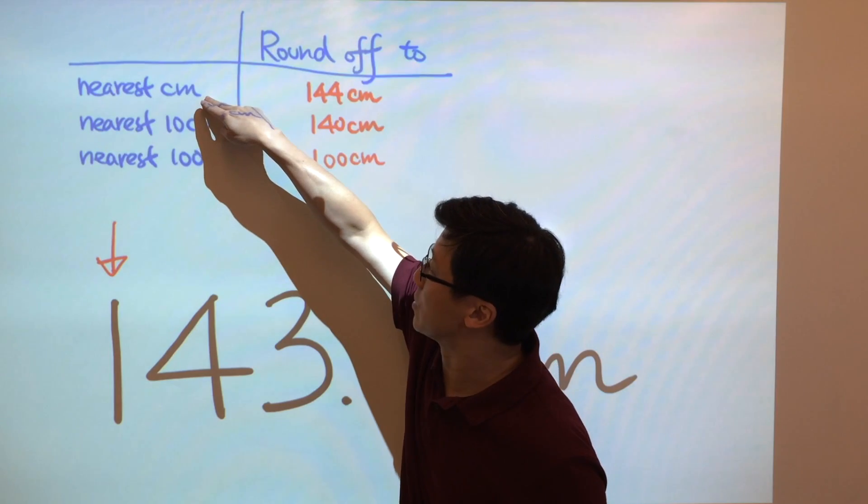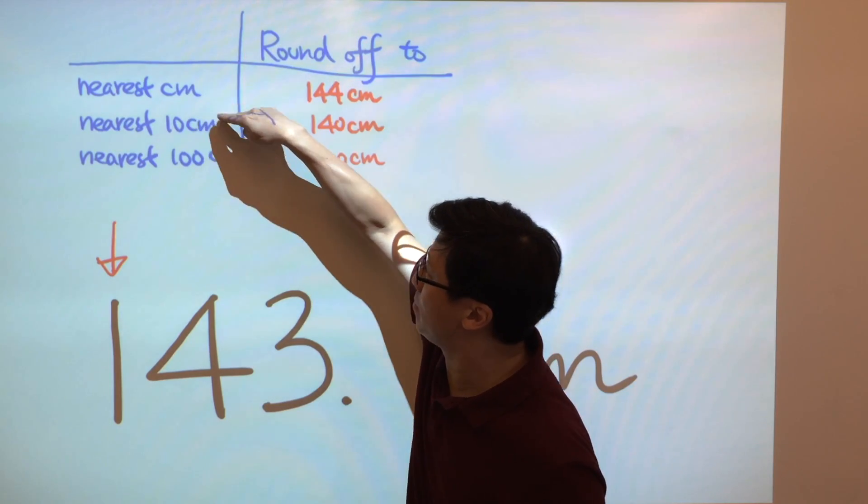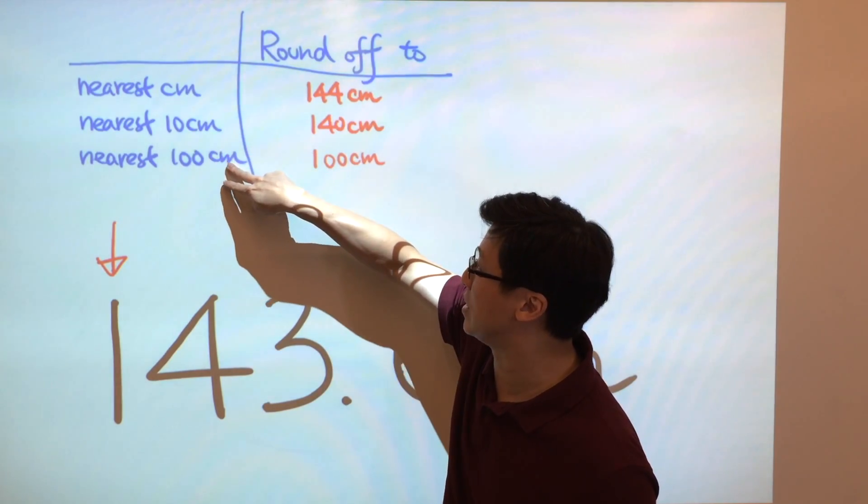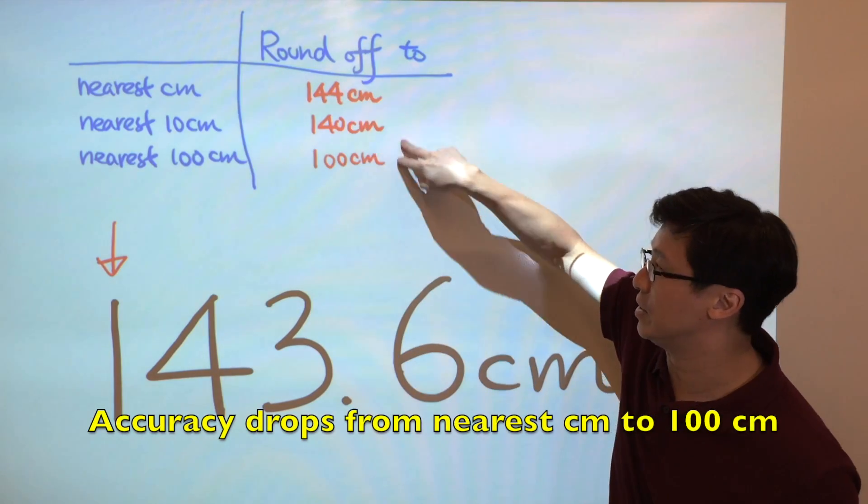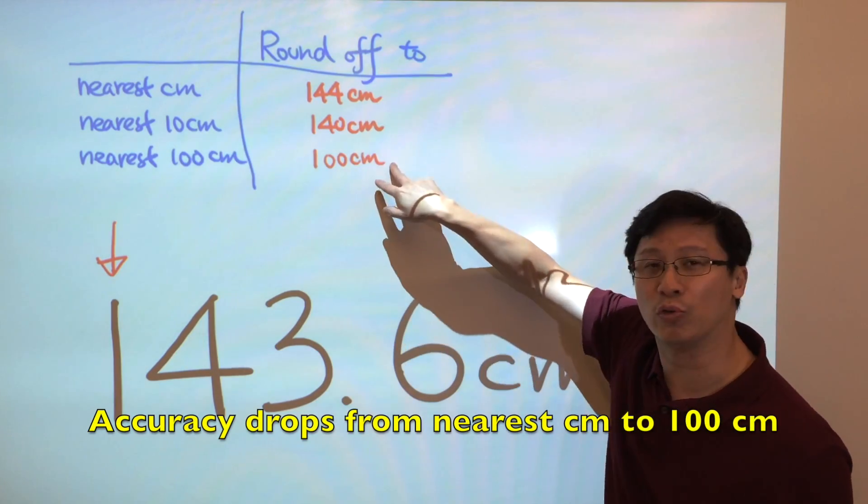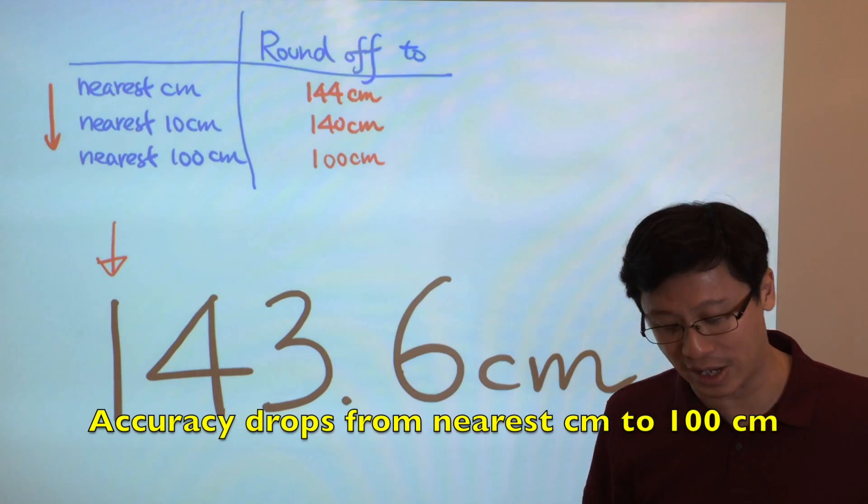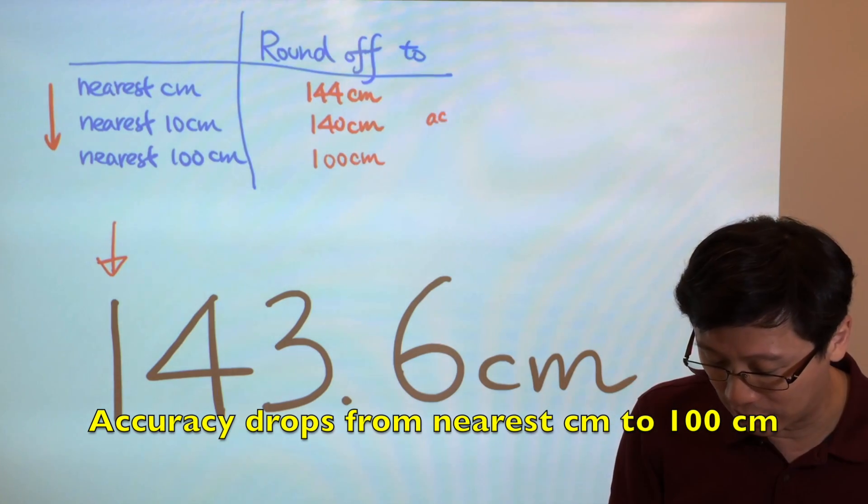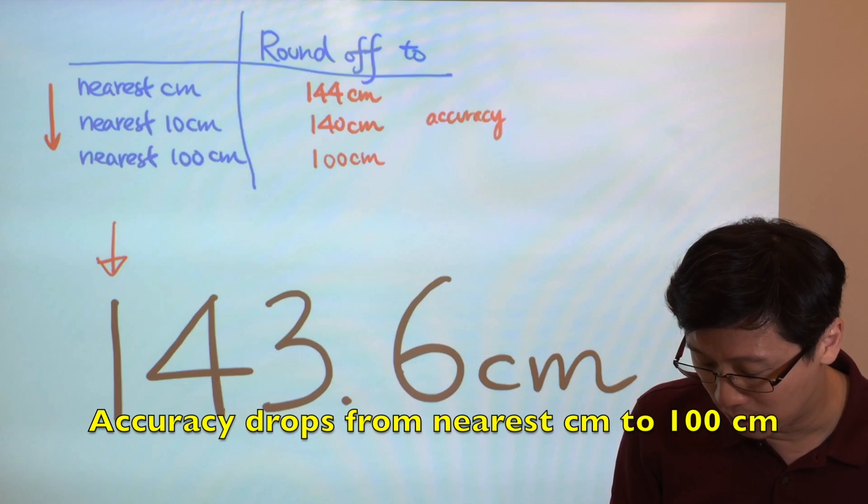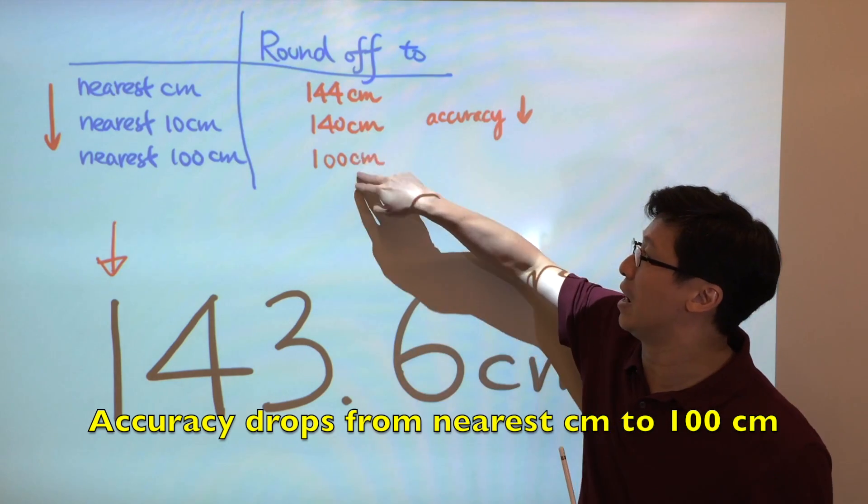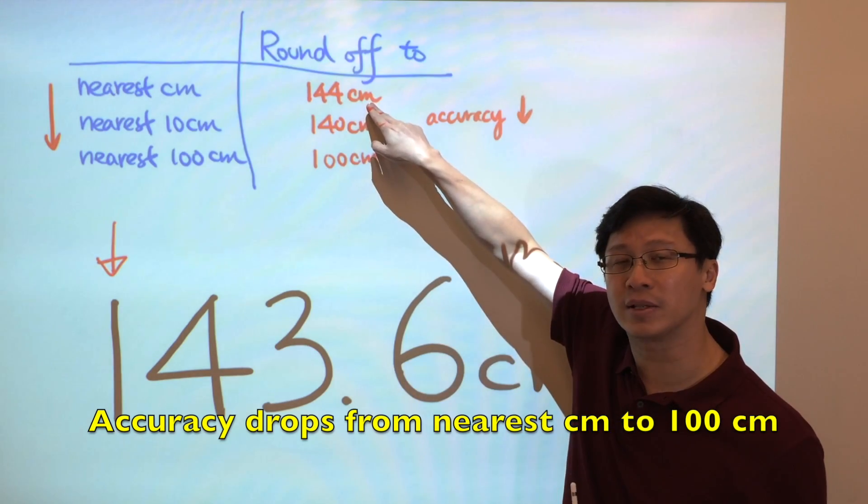And as we can see, as we go down from cm to 10 cm to 100 cm, the accuracy of the final value will drop. If we go from cm to 100 cm, the accuracy drops, that means these numbers are less accurate than the numbers at the top.